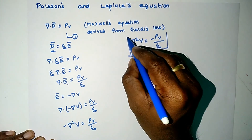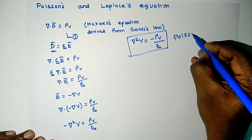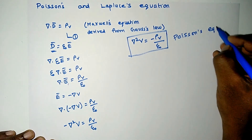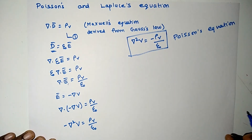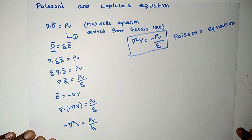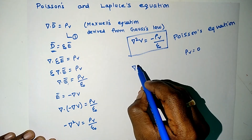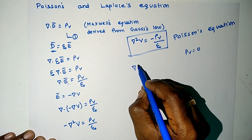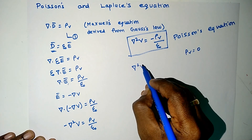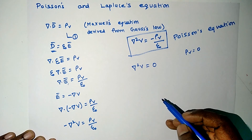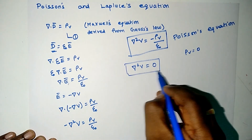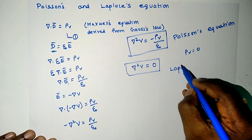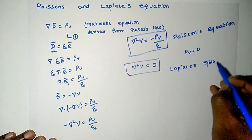This is called Poisson's equation. Laplace equation is a specific case of Poisson's equation when volume charge density is equal to zero. When we substitute volume charge density equal to zero in the previous equation, del squared V is equal to zero. This is called Laplace equation.